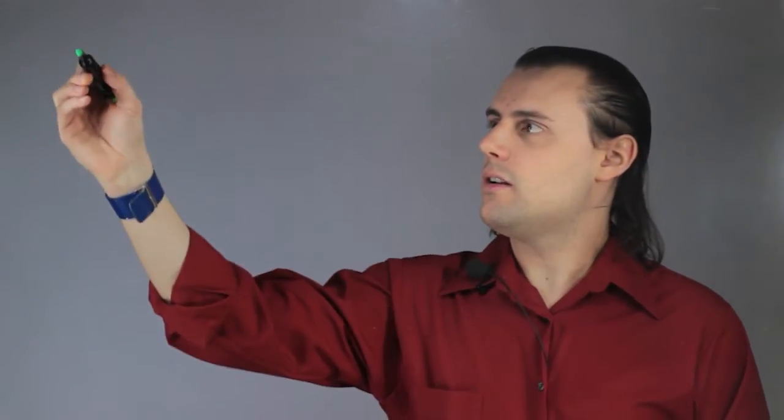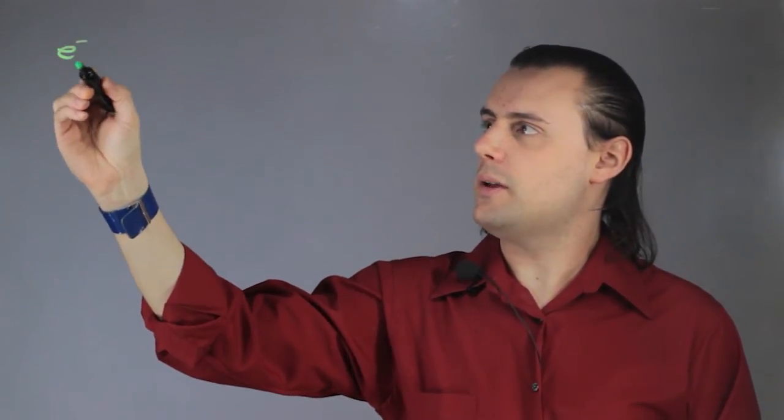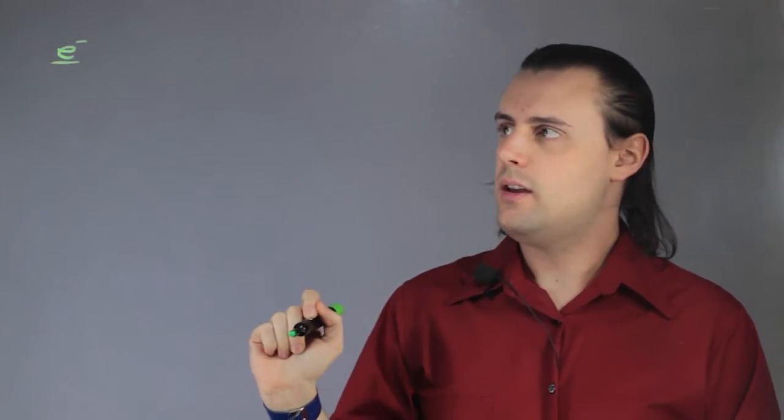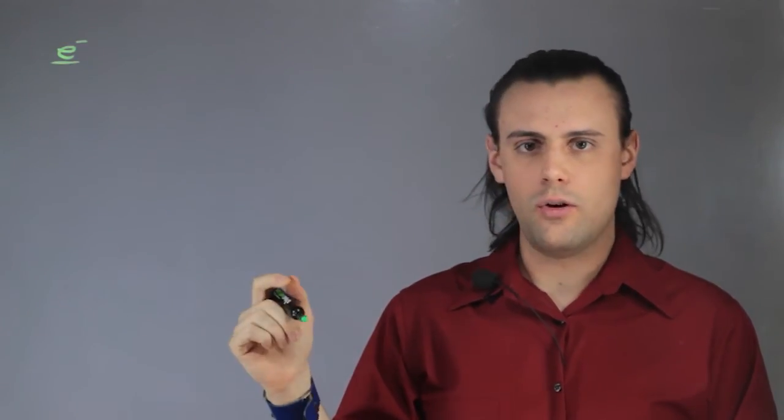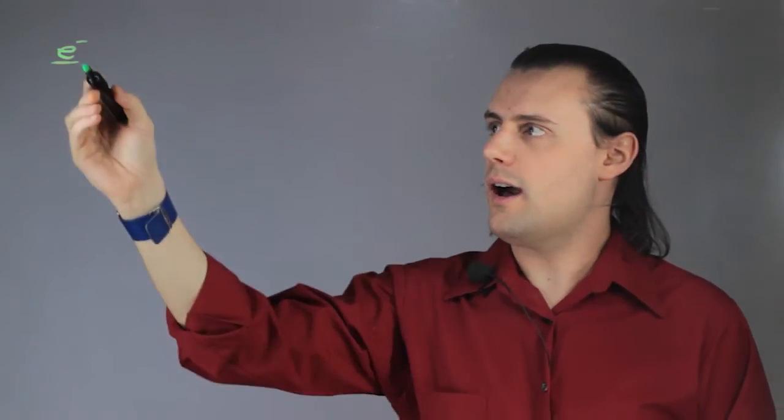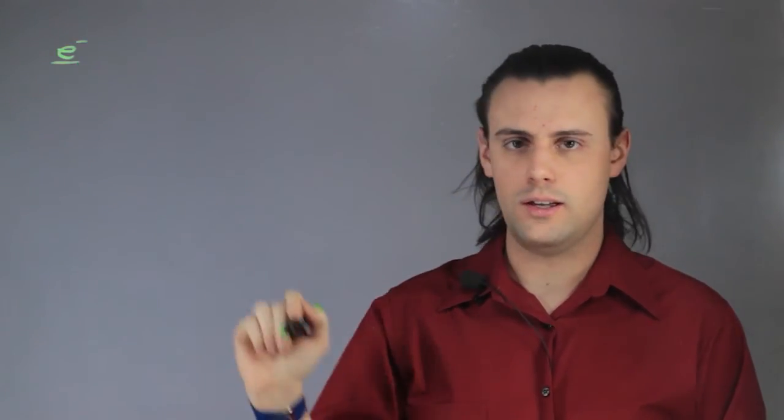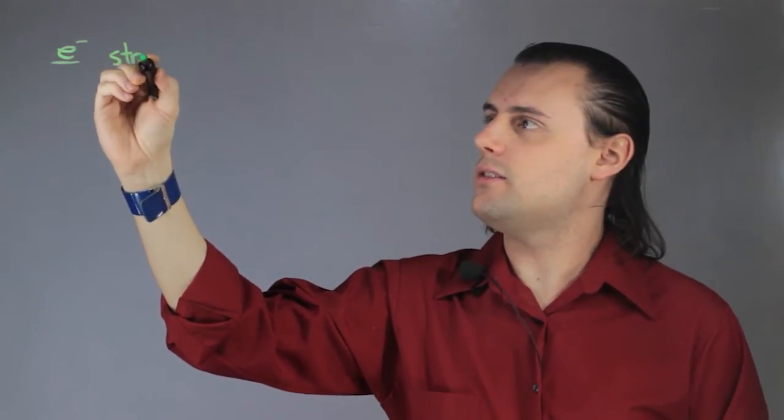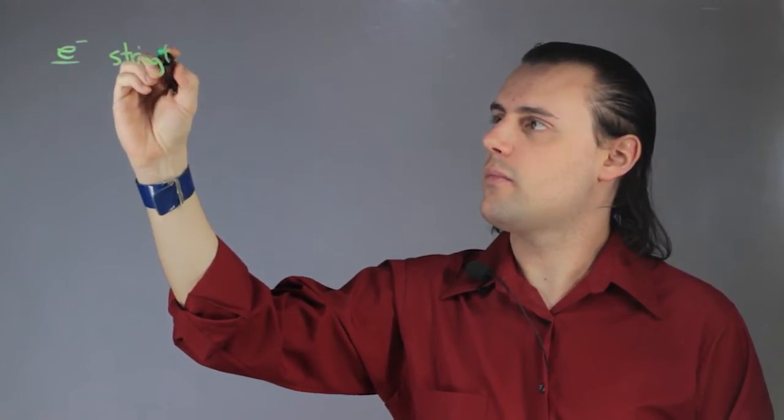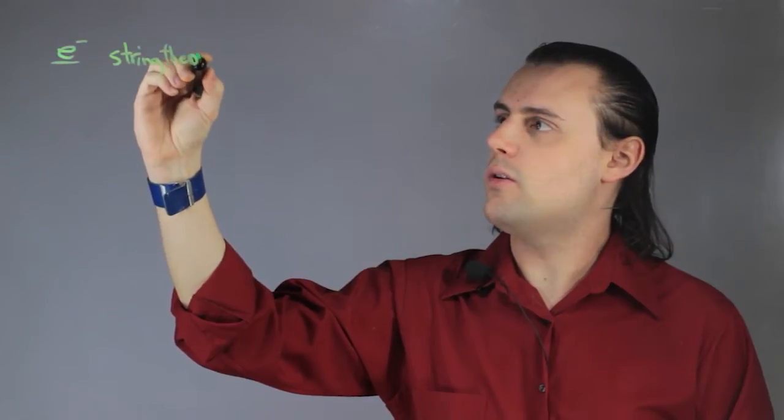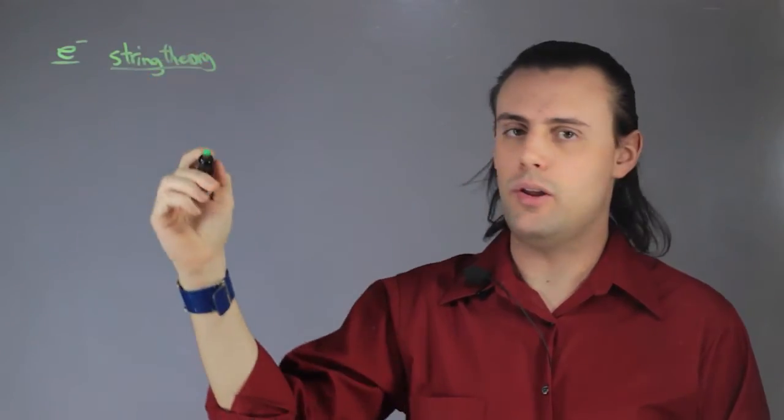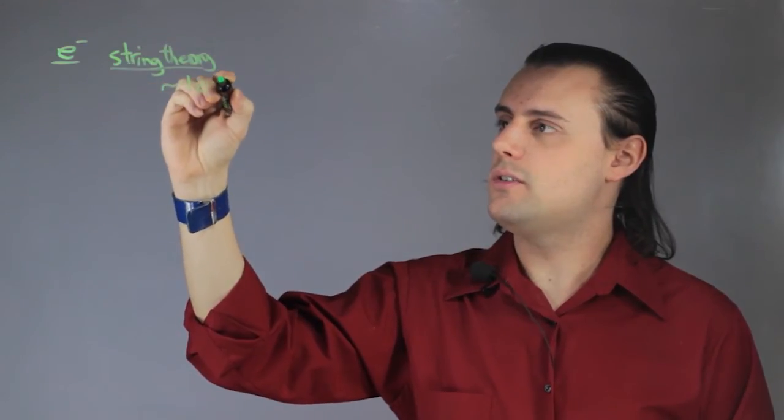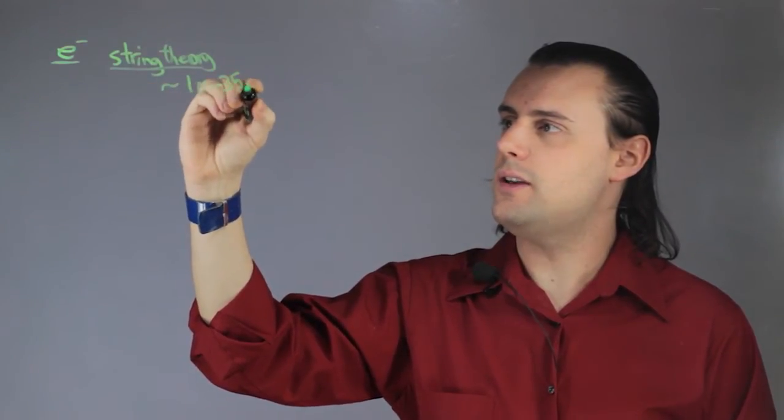An electron is a tiny fundamental particle of negative charge, and the truth is no one really knows how truly big an electron is. String theory predicts that the size of an electron is on the order of a Planck length, which is approximately 1 times 10 to the negative 35 meters.